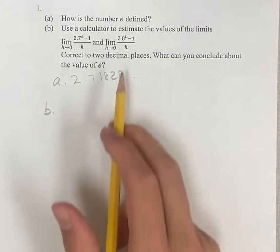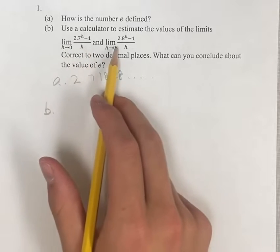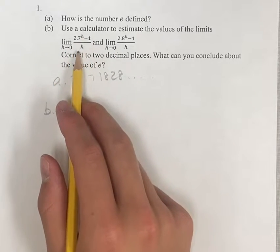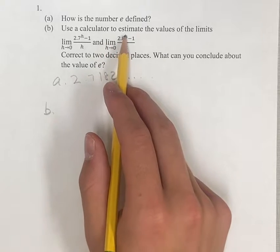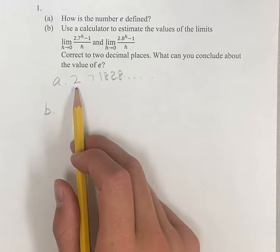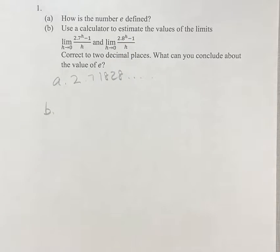Now, using a calculator to estimate the value of the limits of, as h approaches 0, of 2.7 to the h minus 1 over h, and 2.8 to the h minus 1 over h. You'll probably see that this is slightly underneath e, slightly over e.